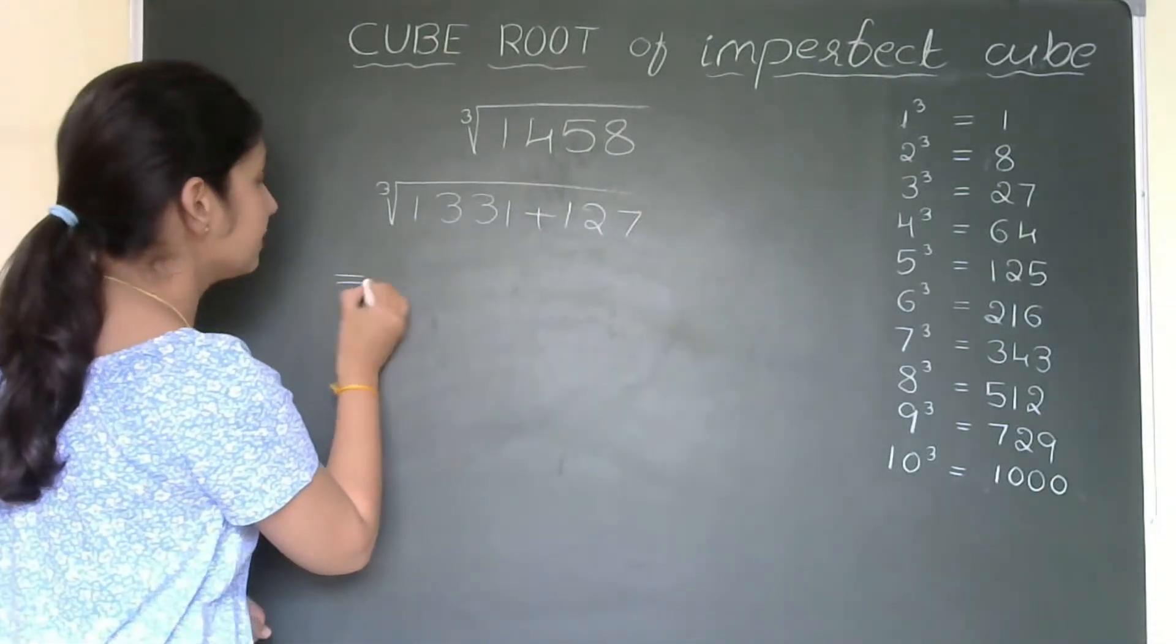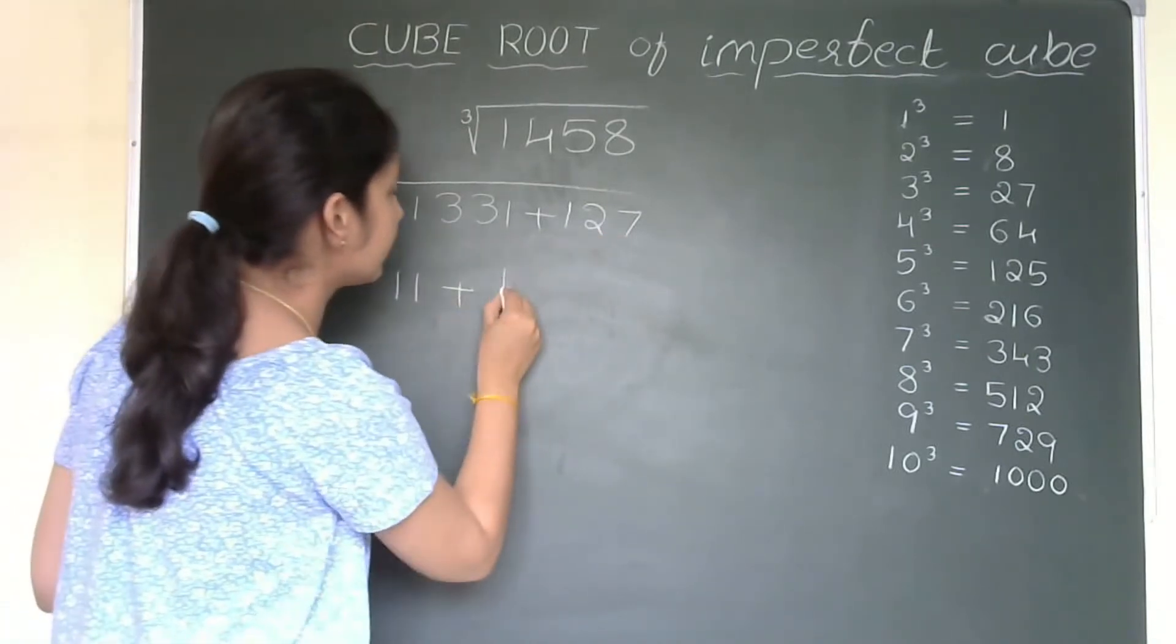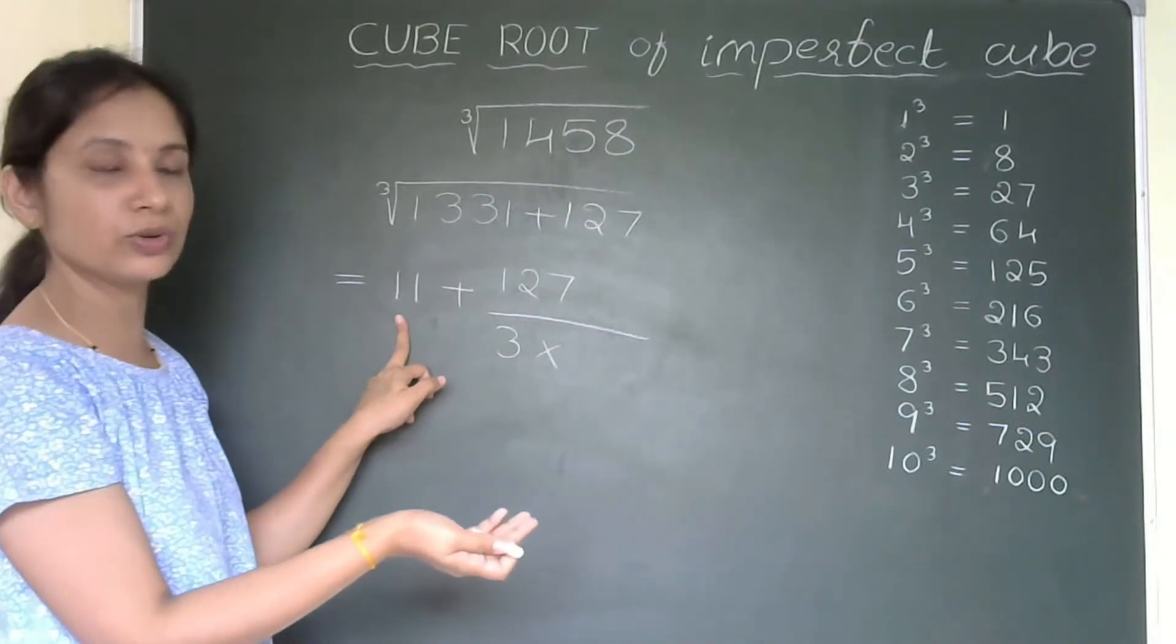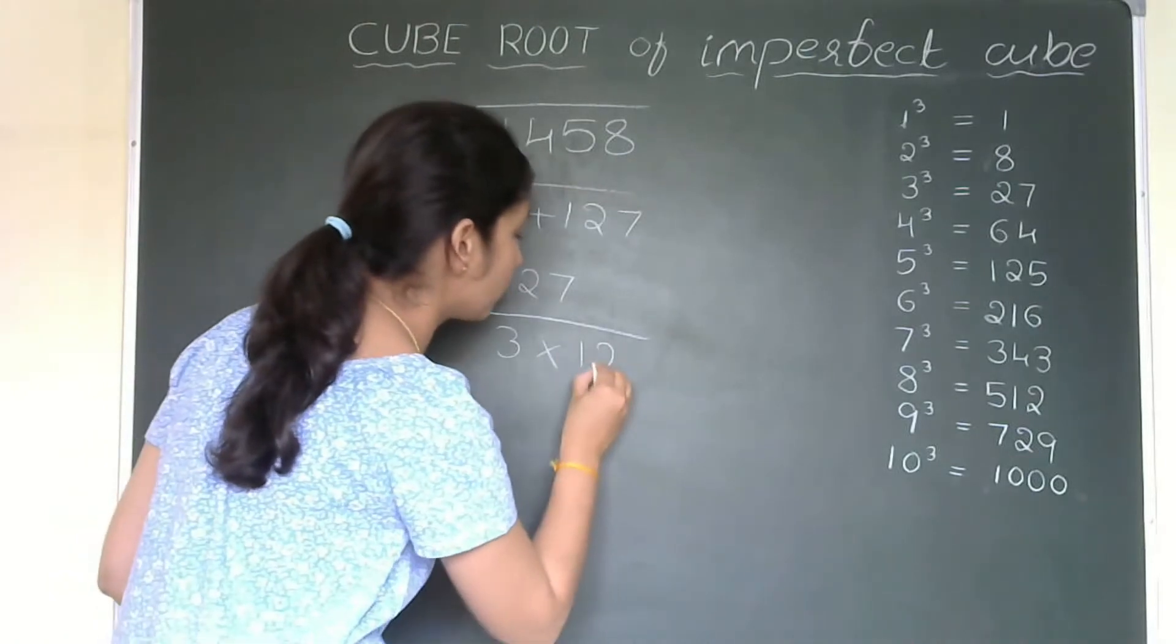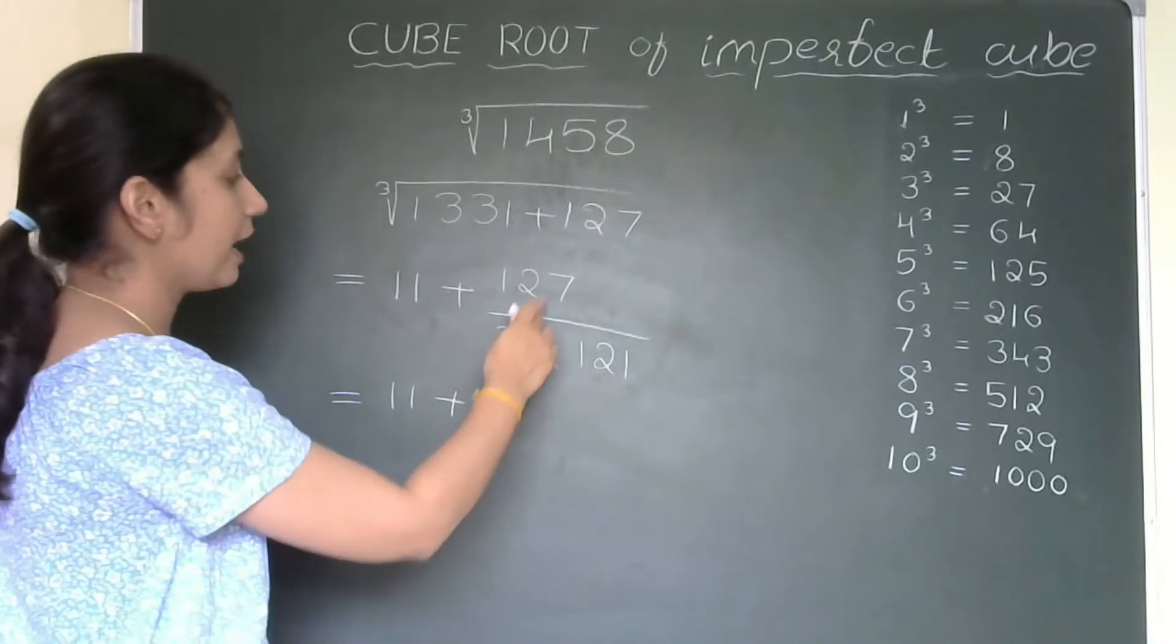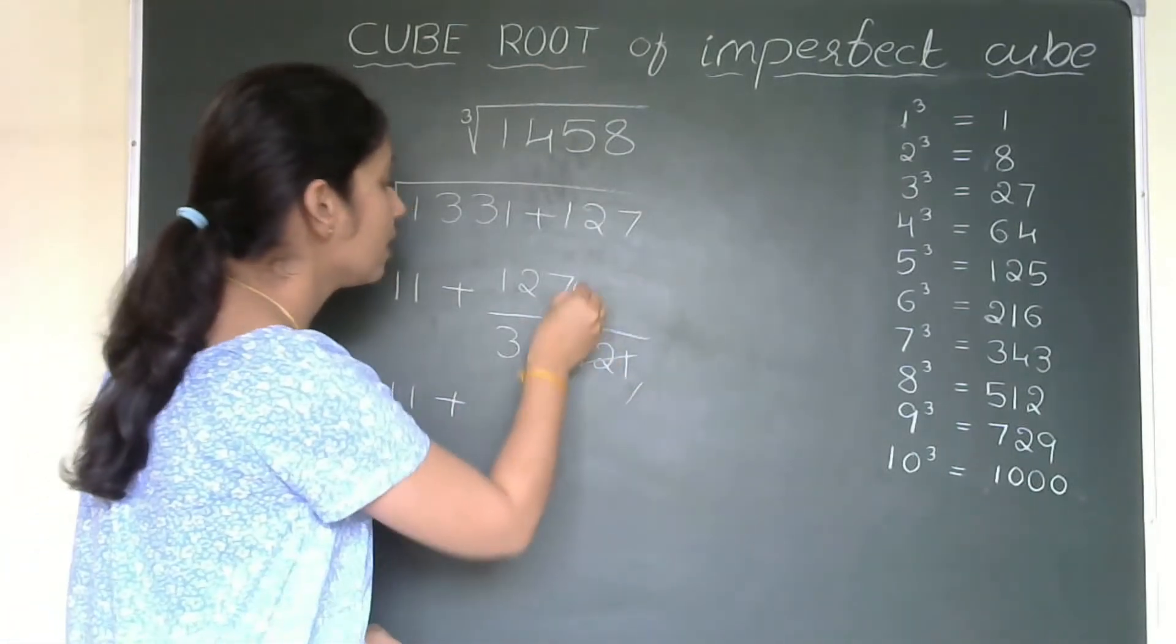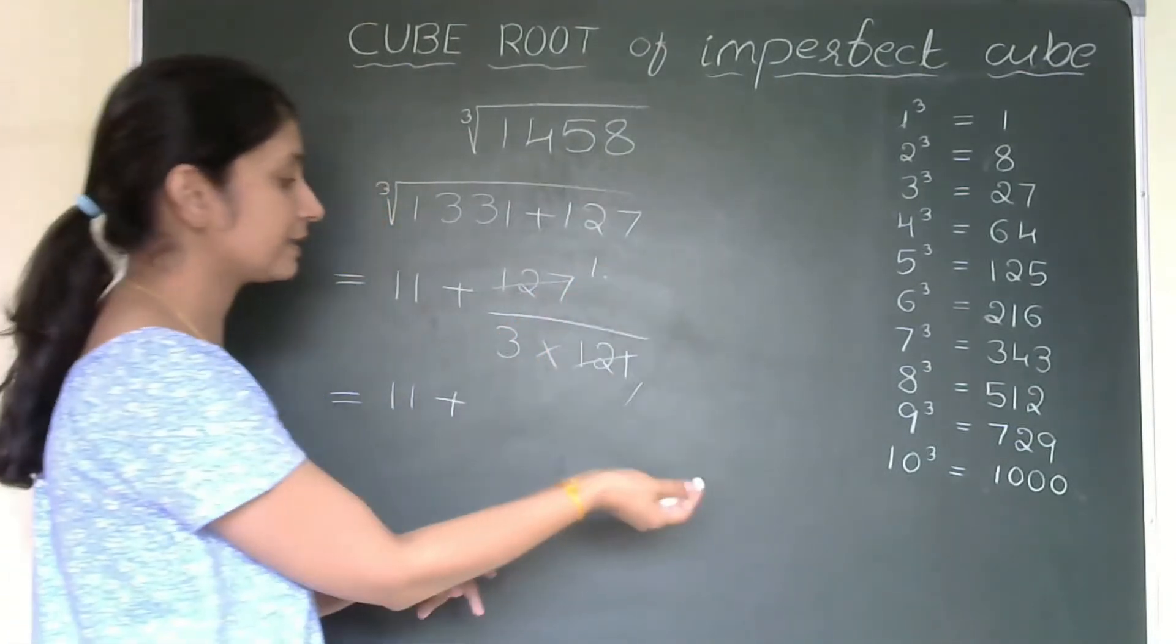So, my next step is cube root of this number is 11 plus this 127 as it is divided by this 3 multiplied by 11 times 11. 121 also you can write or 11 times 11 directly you can write. I will write 121, 11 square. So, 11 plus, here I can't go for division because 127 is not divisible by 3. So, what I will do 121 one times.